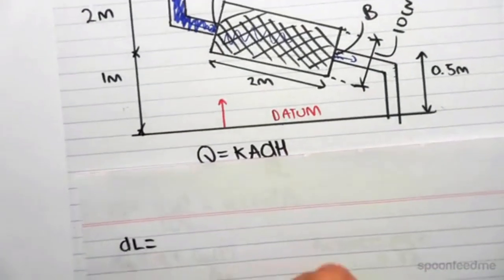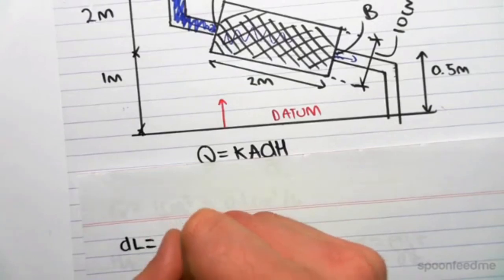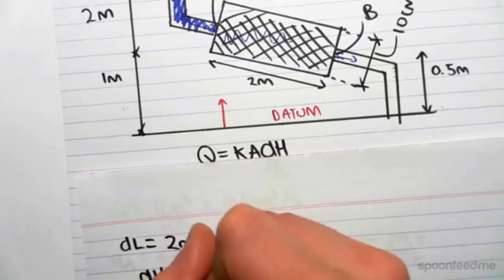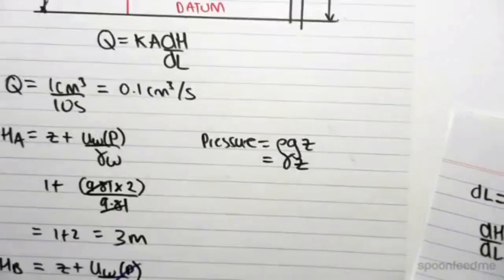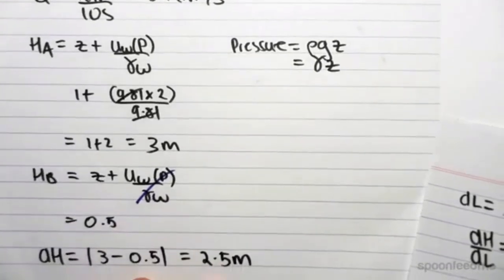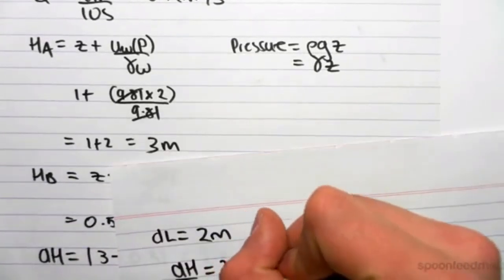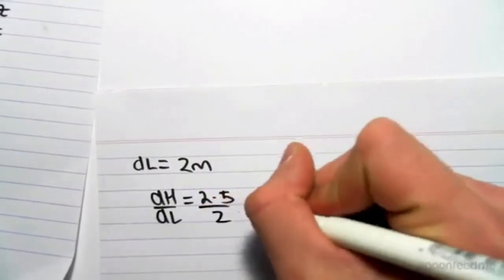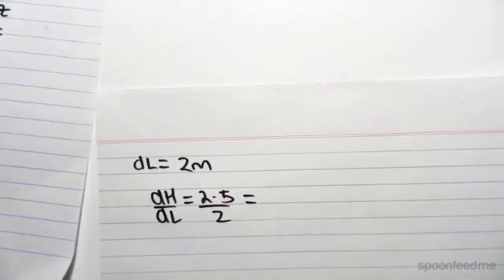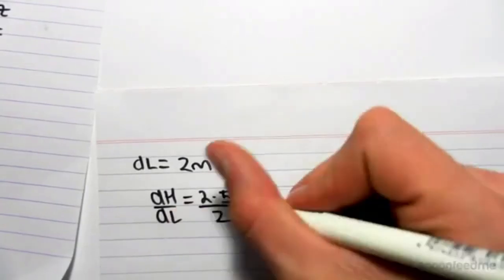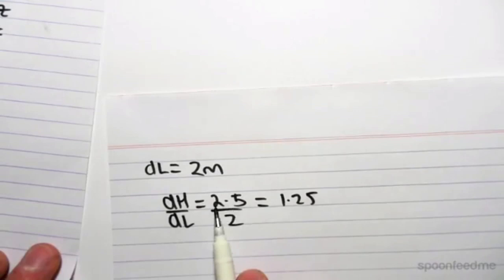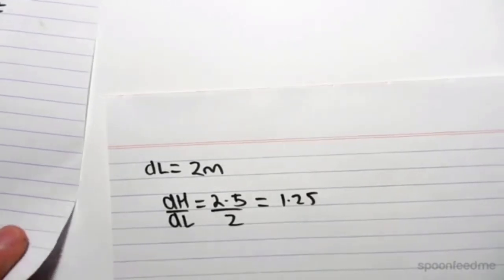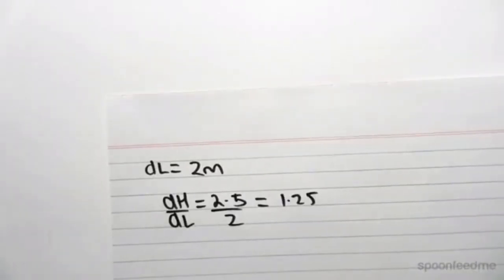So dL equals 2 m, which means we can find dH on dL, the hydraulic gradient. So dH is 2.5 on dL, which was 2. And if we work this out, 2.5 divide 2, we get 1.25. Just also keeping in mind that the units have to be consistent. 2.5 m on 2 m will cancel out, just to give us a number of 1.25.